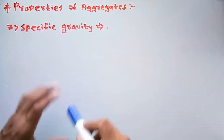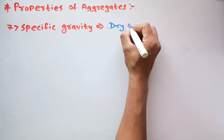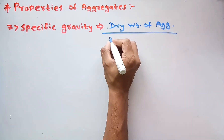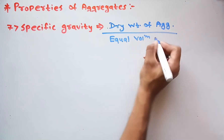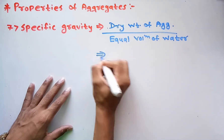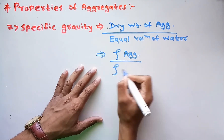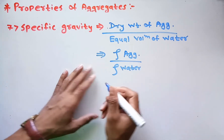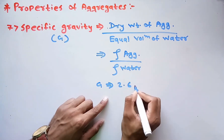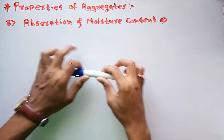The next property is specific gravity, defined as the ratio of the dry weight of aggregate to the equal volume of water — or in simple terms, the density of aggregate divided by the density of water. For good aggregates, the specific gravity G should be in the range of 2.6 to 2.8.